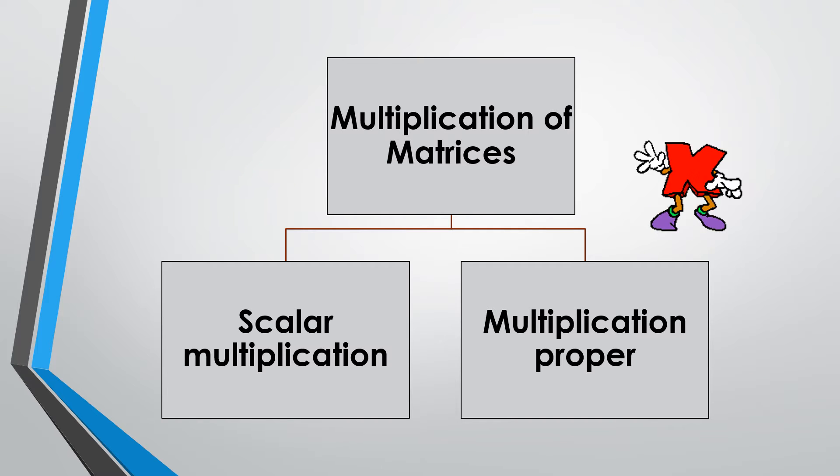Scalar multiplication. When each element of a matrix is multiplied by a constant called a scalar, it is called scalar multiplication. Scalar multiplication is distributed over addition.